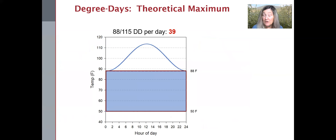And here is our theoretical maximum number of degree days when the low is above 88 — that's the upper threshold. In this case, you get about 39 degree days. And by definition, that's the top end. That's all you can get.